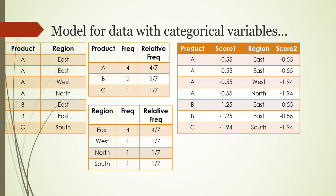So for product, score 1 indicates log of these relative frequencies. For region, score 2 indicates log of these relative frequencies.